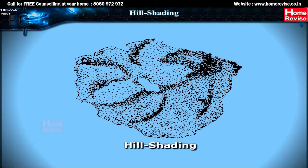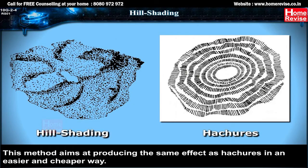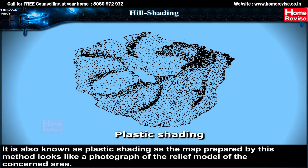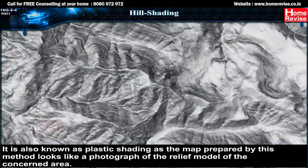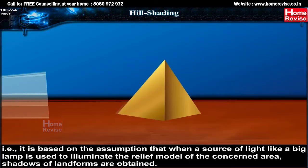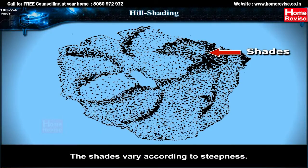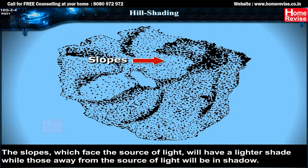Hill shading is a method that aims at producing the same effect as hachures in an easier and cheaper way. It is also known as plastic shading, as the map prepared by this method looks like a photograph of a relief model of the concerned area. The relief is shown by a light and shadow effect, based on the assumption that when a source of light is used to illuminate the relief model, shadows of landforms are obtained. The shades vary according to steepness.